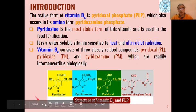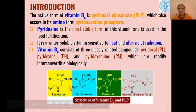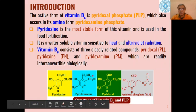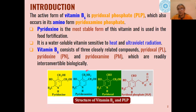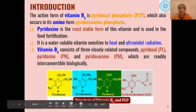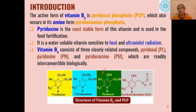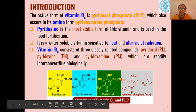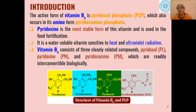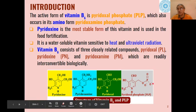Out of all these forms, pyridoxine is where both groups are CH2OH. Pyridoxamine is where one group is CH2NH2 (amino group) and the other is CH2OH (hydroxyl group). Then the third is pyridoxal, where this part is the aldehyde group. When this aldehyde part is phosphorylated — this OH is phosphorylated — we get pyridoxal phosphate, that is PLP.